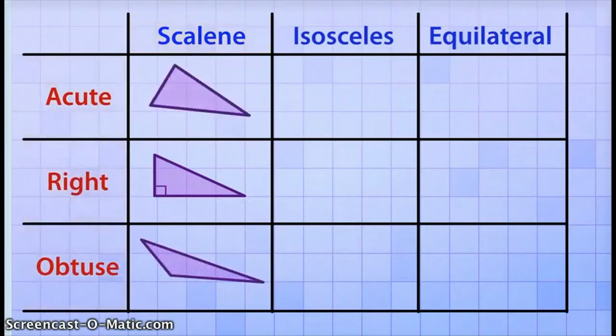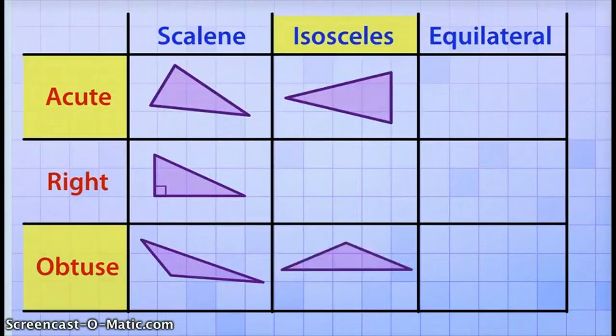In the same way, an isosceles triangle can also be acute, like this one, or obtuse, like this one. And in one special case, an isosceles triangle can also be a right triangle, like so.